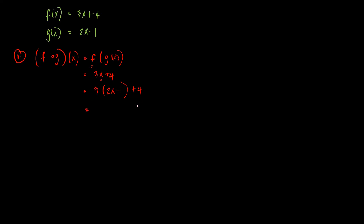Once we input the first function into the second function, now let's distribute. We are going to distribute 3 to 2x and 3 to negative 1, then simplify. 3 times 2x gives 6x; 3 times negative 1 gives negative 3; then plus 4. Simplifying: 6x has no like term, so we copy it. Negative 3 plus 4 gives plus 1. So f composed of g of x is equal to 6x plus 1.